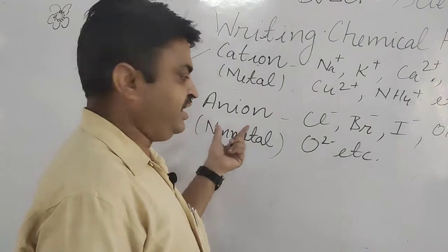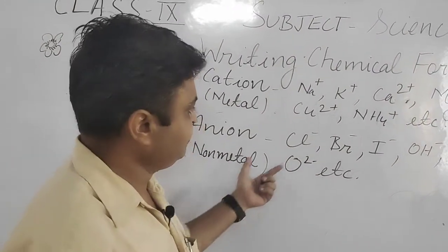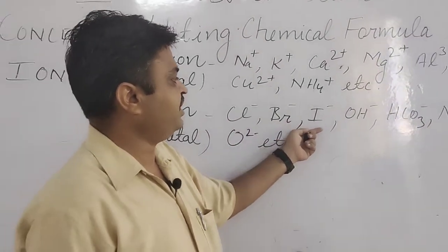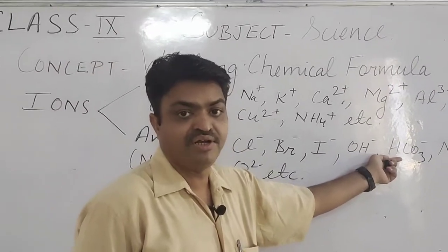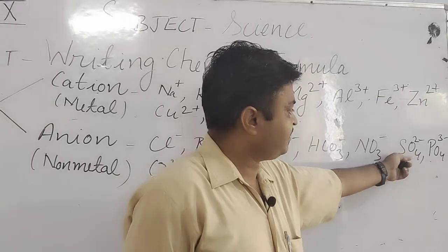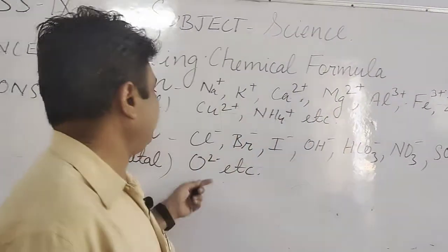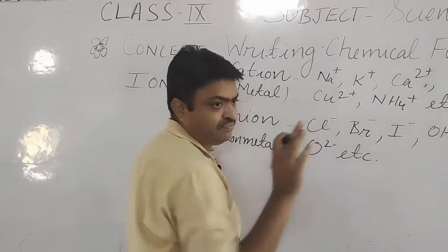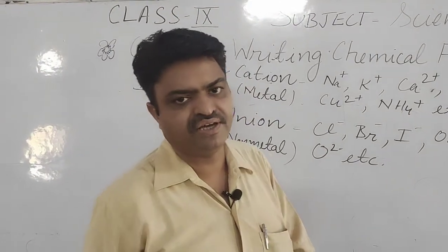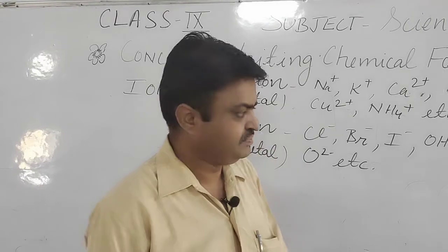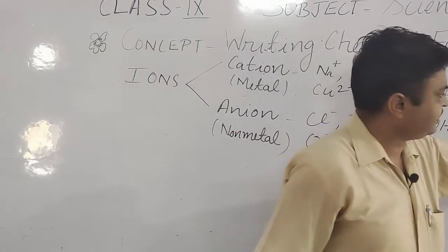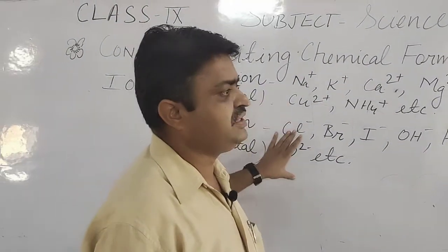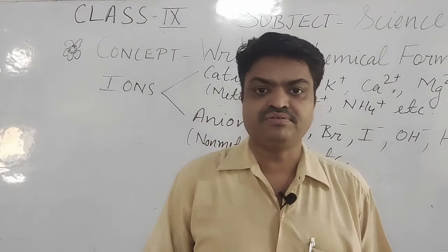There is also the anion. Anions are non-metals and they are electronegative in nature — they have a negative charge on them. Examples include chloride ion, bromide ion, iodide ion, hydroxide ion, hydrogen carbonate ion, nitrate ion, sulfate ion, phosphate ion, and oxide ion. If there is only a minus sign, it means they have one negative charge. For sulfate it is 2, and for oxide it is also 2. With the help of this, you can easily write the chemical formula.